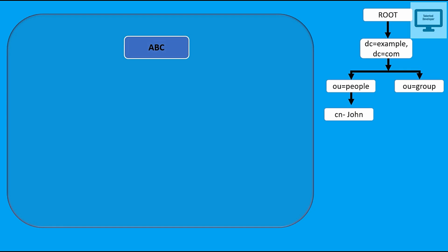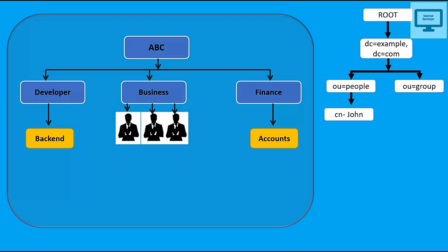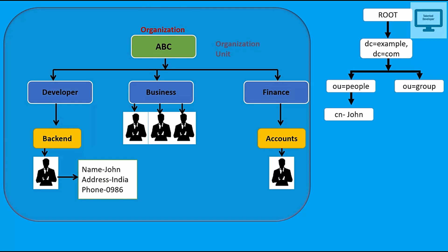Let me relate this structure with an example. Imagine ABC is a company. Inside it they have different groups or teams: Developer, Business, and Finance. Inside Developer there are sub-teams, inside Finance there are sub-teams, and inside those they have users. ABC will be the organization name, Developer/Business/Finance are Organization Units, and inside them a user named Sean would be a Common Name entry.